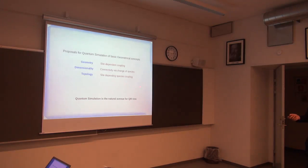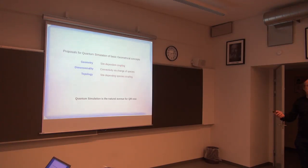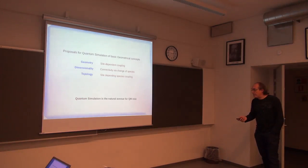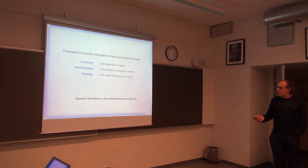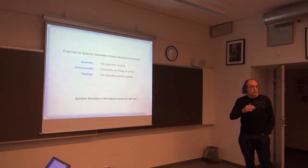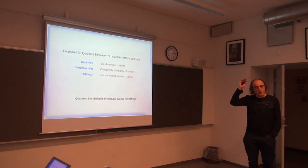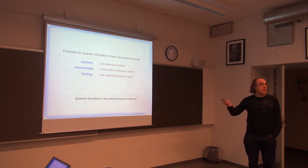To summarize the first part: if you want to do quantum simulation, you have to think about what is the relevant issue you want to simulate and then look for a system where that is controllable. I gave three examples: background geometry in terms of site-dependent couplings; dimensionality via species; and topology via site-dependent species coupling. This is a dictionary for talking to experimental people — they understand site-dependent coupling, changes of species — and now we want to have the simulation of these physical concepts. This natural philosophy of looking for what is controllable will be the natural progress in the next 10 years, rather than thinking of big quantum computers.